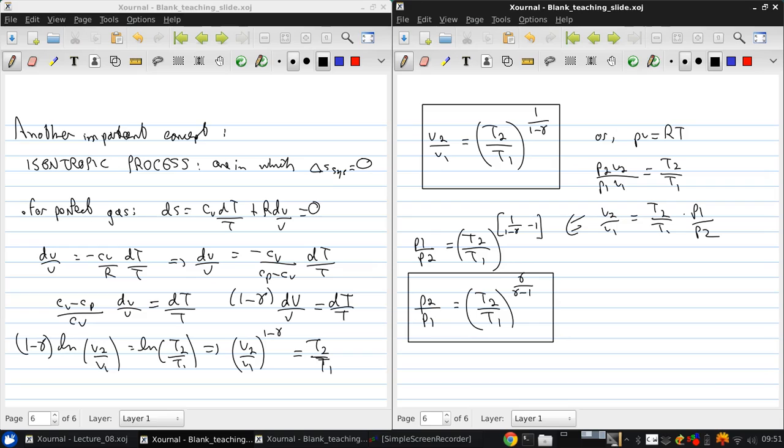Now for air, since gamma is 1.4, this exponent is 1.4 over 0.4, which is 3.5 for air.